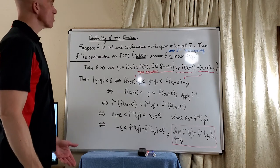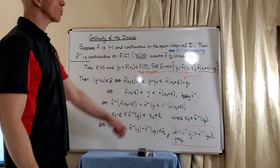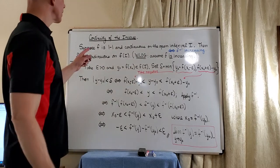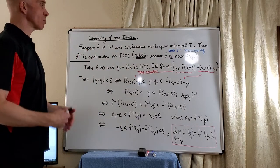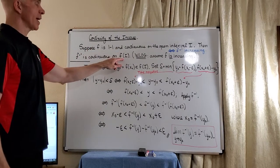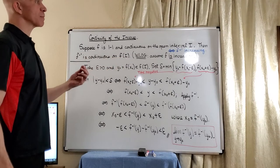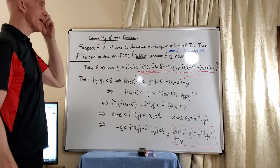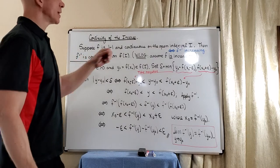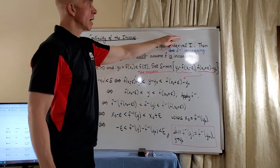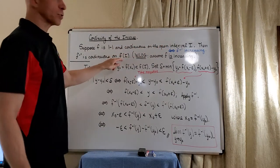So suppose f is one-to-one and continuous on the open interval i. Then f inverse is continuous on the open interval f of i. What's nice about this is that by the intermediate value property, the continuous image of an interval is also an interval.